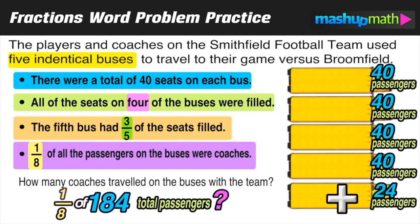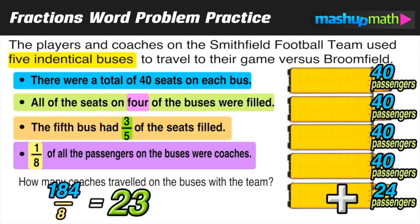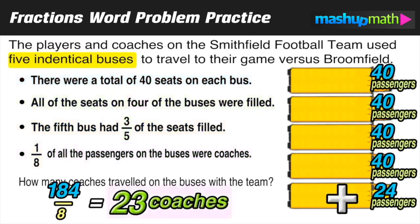To find one-eighth of 184, we divide 184 by 8, and our quotient is 23. So we can conclude that of the 184 passengers, 23 of them were coaches and the rest were players. Setting up the model was the tricky part, but once we did, it was much easier to solve. In all future problems, draw a diagram and get your thinking onto paper — it makes a big difference.